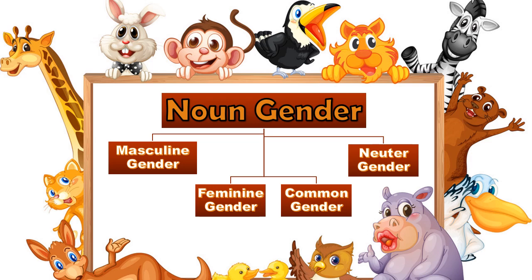Now let us learn about the types of noun gender. There are four types of noun gender as you can see on the screen. They are: masculine gender, which refers to the male; feminine gender, used for female; common gender, used for both male and female; and neuter gender, used for non-living things. Let us study all these types in detail.